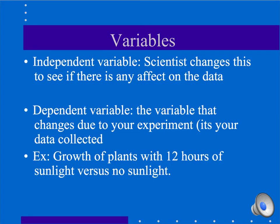Some other variables we have to understand include the independent variable and the dependent variable. The independent variable is what the scientist changes. In my example, it was the number of hours of sunlight. The dependent variable is what changes, also known as your data collected. I try to remember these by remembering my dependent is my data, D and D go together.